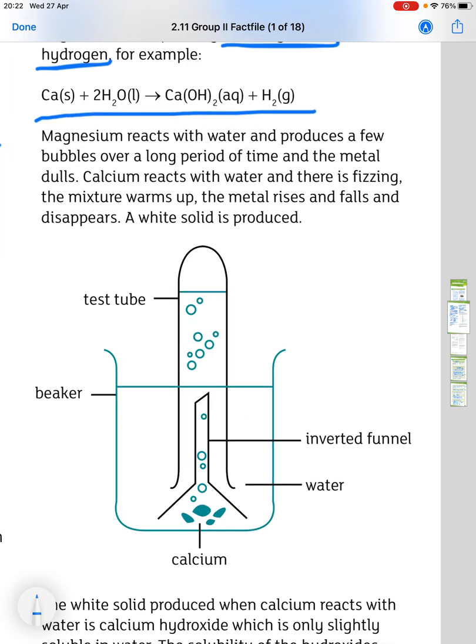Magnesium reacts with water and produces a few bubbles over a long period of time. And the metal dulls. Calcium reacts with water and there is fizzing. The mixture warms up and the metal rises and falls and then disappears. And a white solid is produced.